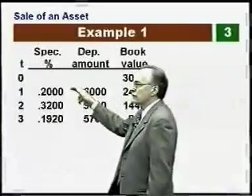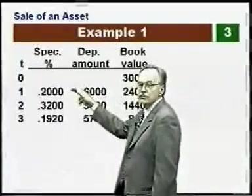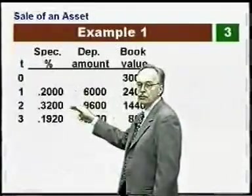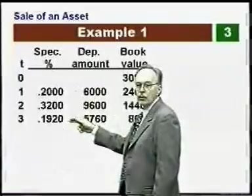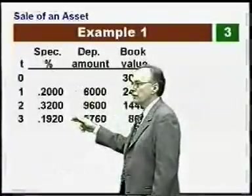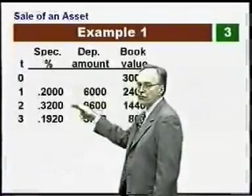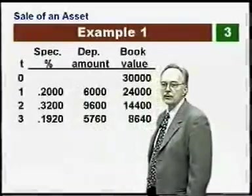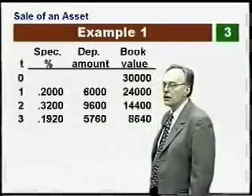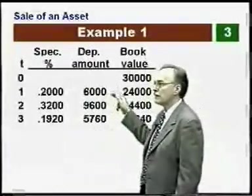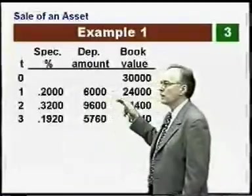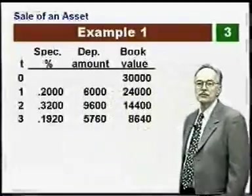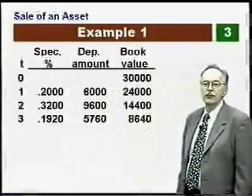Here are the specified percentages for the first three years: 20% in year one, 32% in year two, and 0.192 in year three. These come from the tables for the five-year specified percentages method. Applying these to the $30,000 asset value gives us the depreciation amount, and then we get our book values resulting from that.